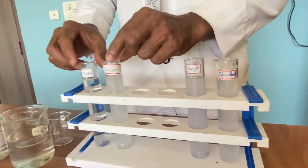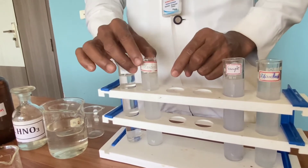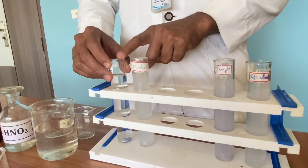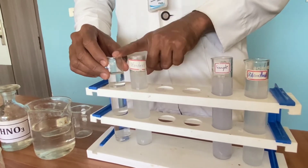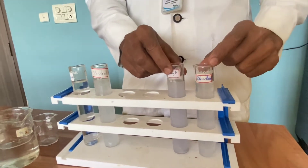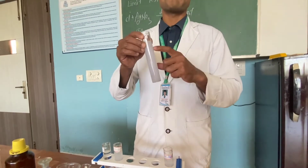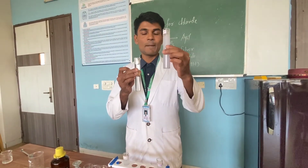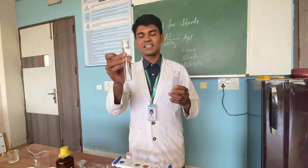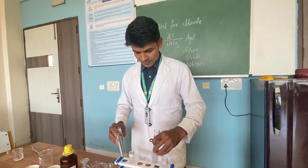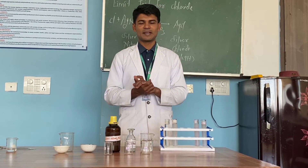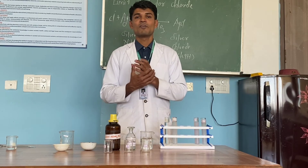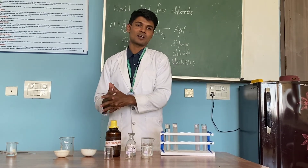Now if you look at this: this is the sample solution and this is the standard solution. In this case, the turbidity in the standard solution is more than the sample. So it represents the content of Chloride ion in one sample solution is more, and the content of Chloride ion in the other sample solution is less as compared to the standard. This sample does not pass the limit test for Chloride, and this sample passes the limit test for Chloride. This is how we perform the limit test for Chloride, and by performing it we can identify whether Chloride impurity is present in that particular compound or not. Thank you.